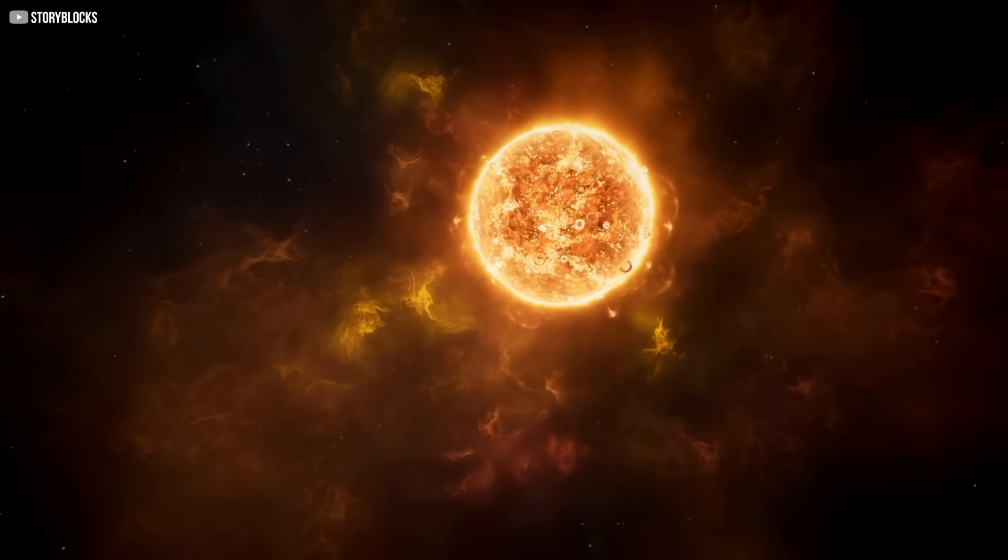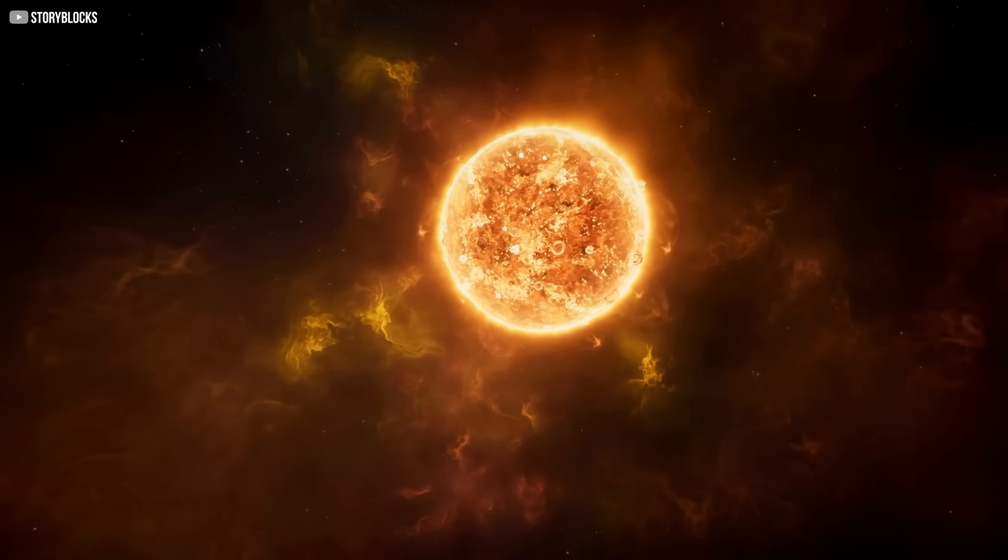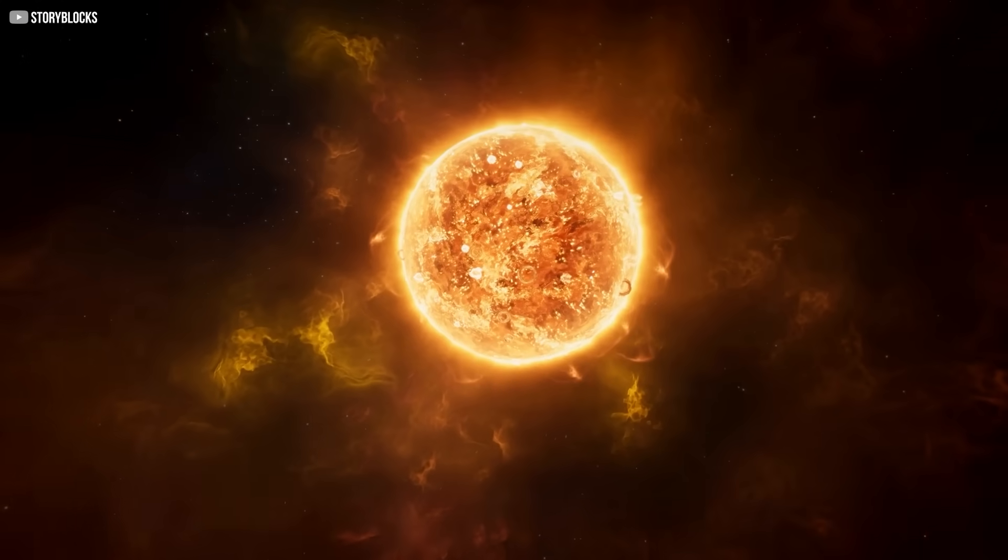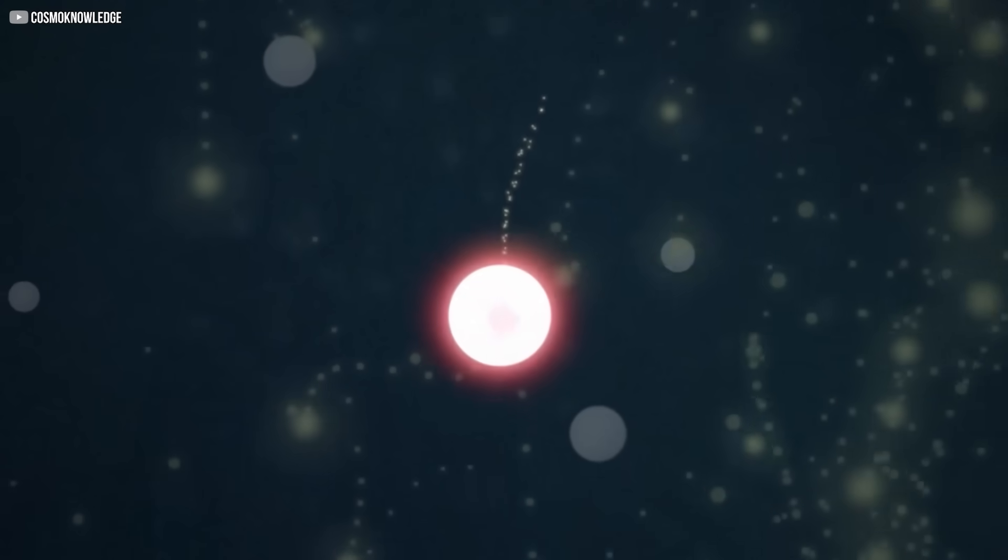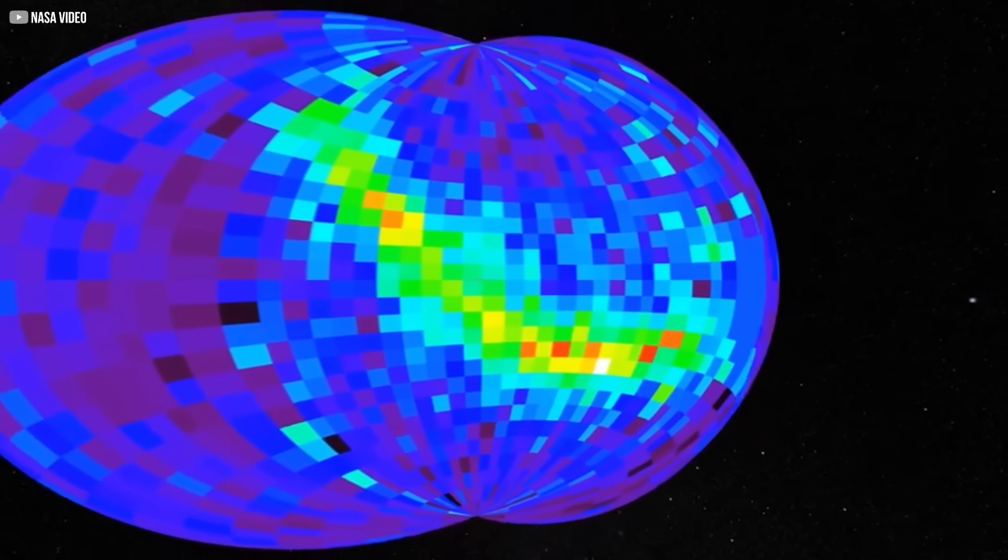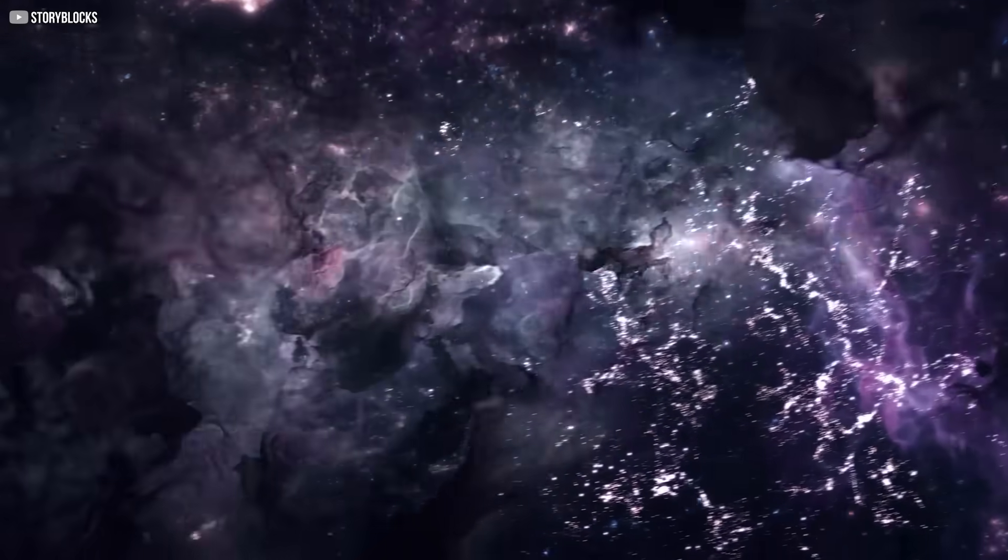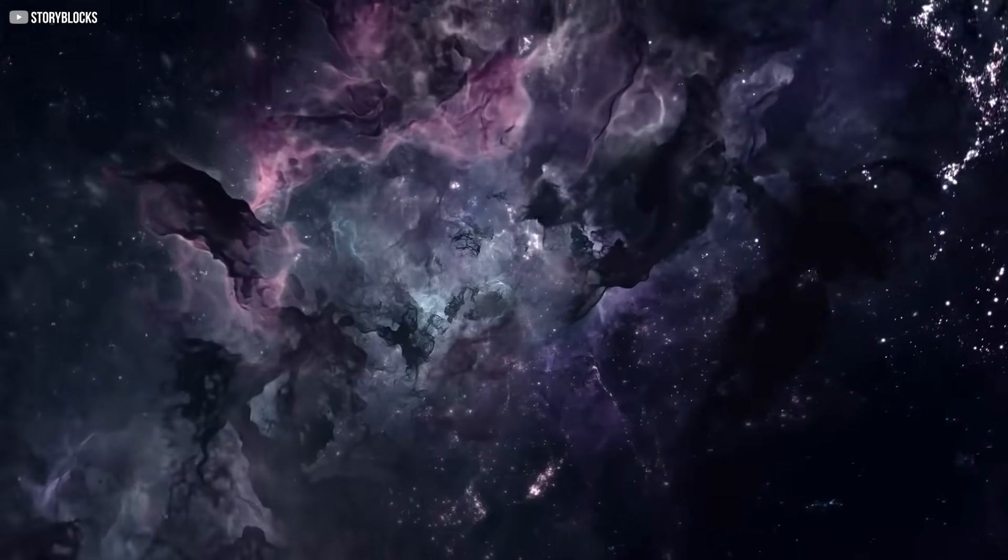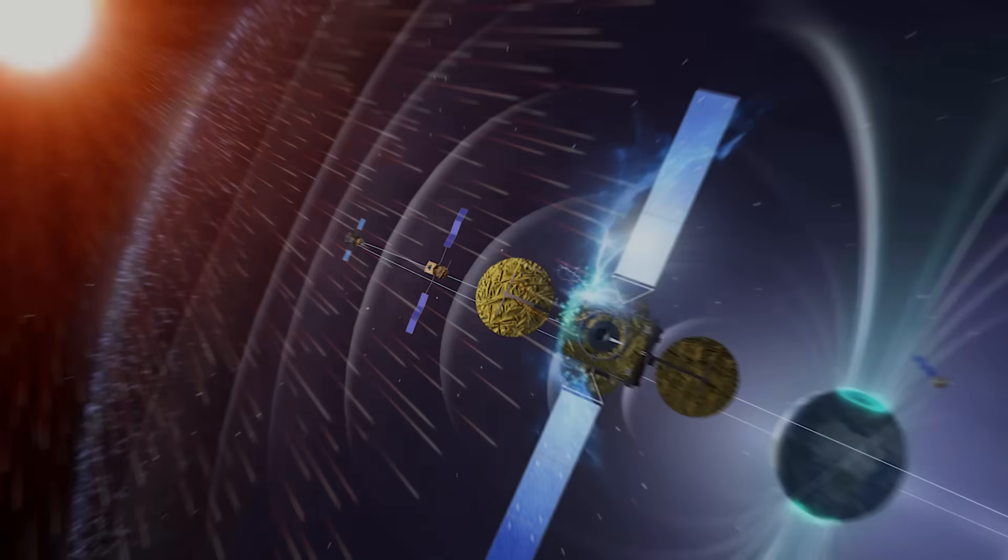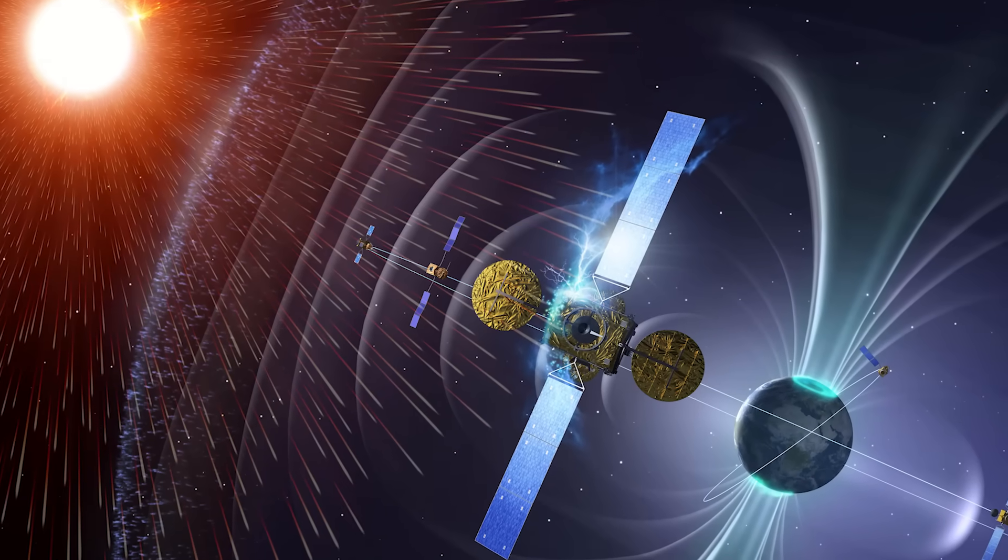The Sun's activity plays a crucial role in determining the shape and size of the heliosphere. During solar maxima, when the Sun is more active and its solar wind is stronger, the heliosphere expands, pushing the heliopause outward. In contrast, during solar minima, when solar activity decreases, the solar wind weakens and the boundary contracts.